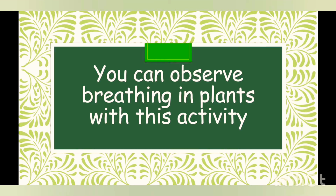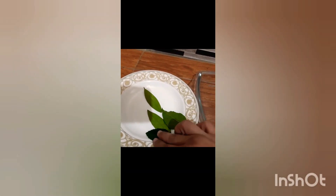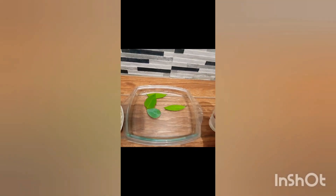You can observe breathing in plants with this home activity. For this you need a shallow glass bowl, fresh leaves removed from a tree, lukewarm water, and a magnifying glass — that is optional. Cut fresh leaves from a plant; you can use different kinds of leaves. Place them upside down in a shallow glass dish, then add some lukewarm water — enough that all the leaves are submerged. Then place the dish in direct sunlight for two to three hours, and then you can witness the breathing in plants.